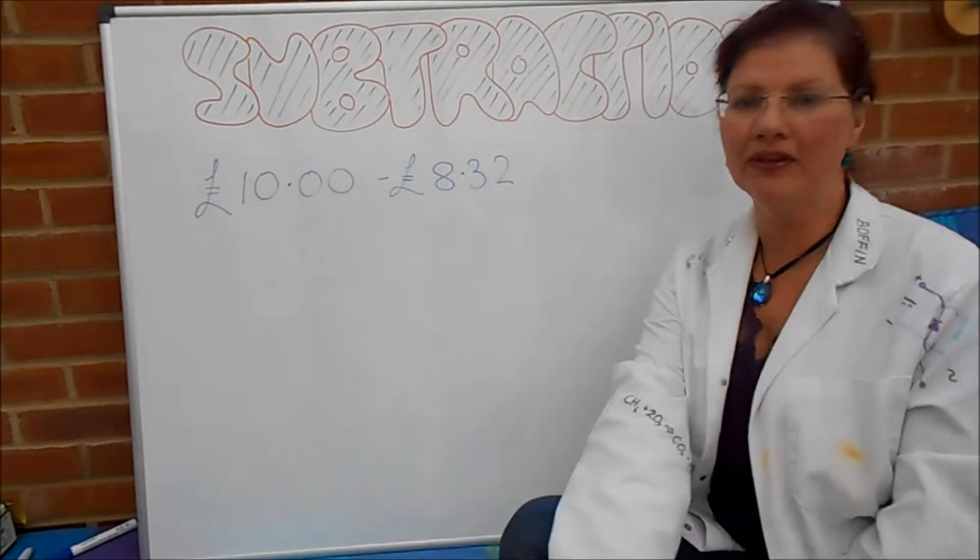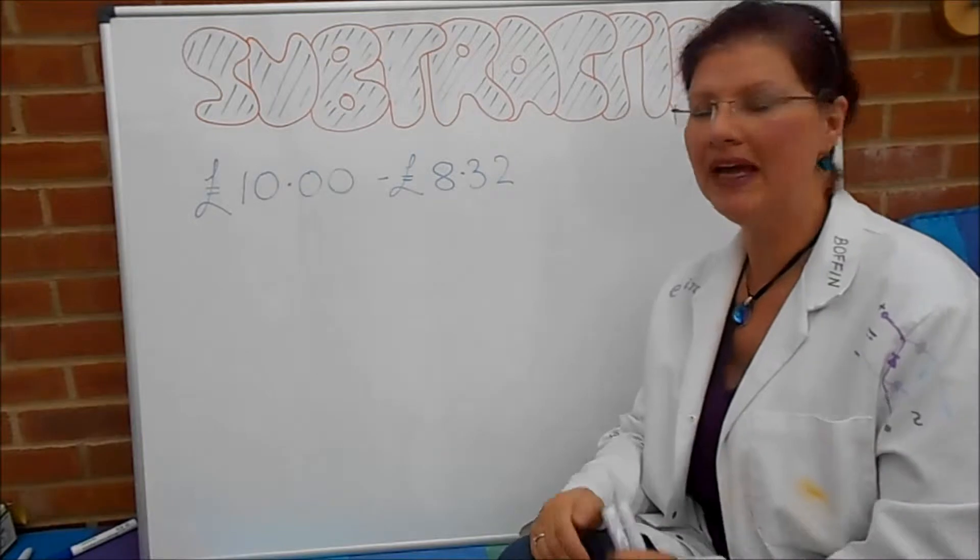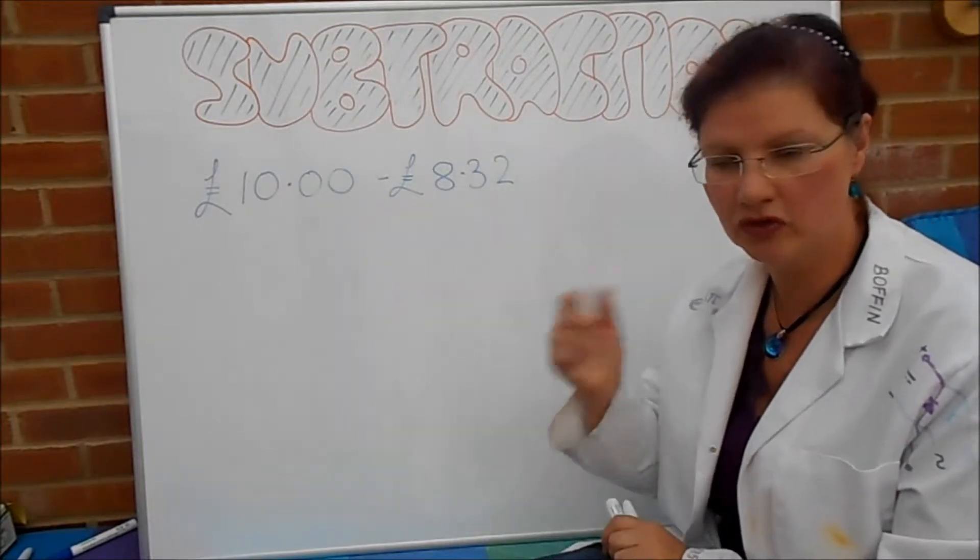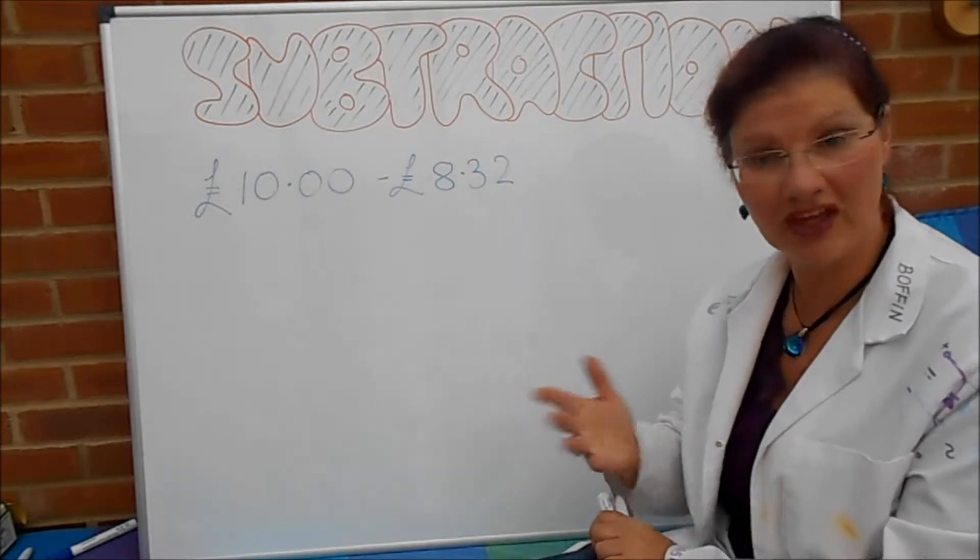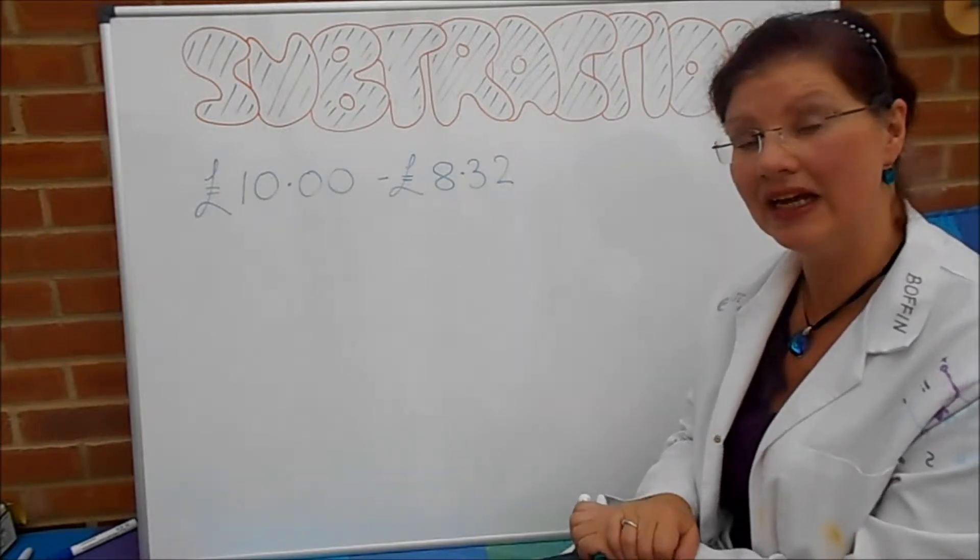So this is the shopkeeper method. I've given these in pounds here and what I've said is we've got £10 because you paid with a £10 note, take away £8.32 because that's the value of the goods and we need to calculate the change.